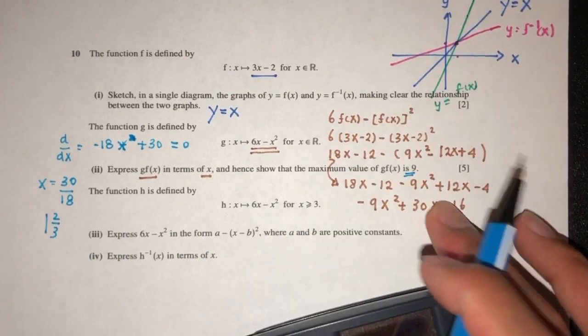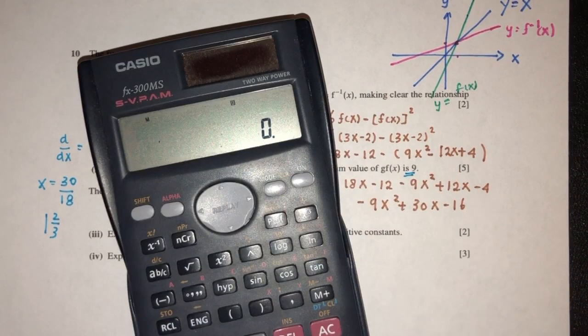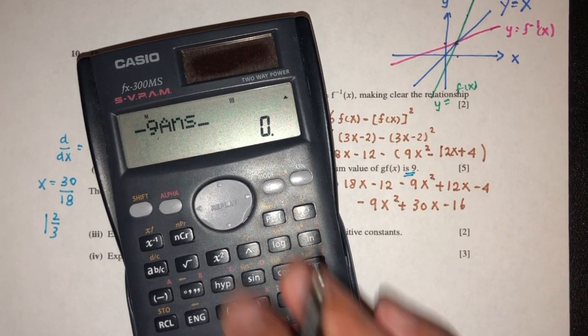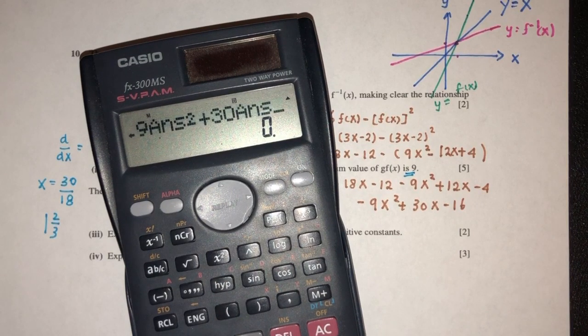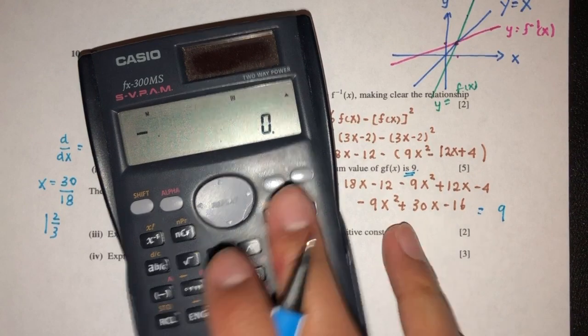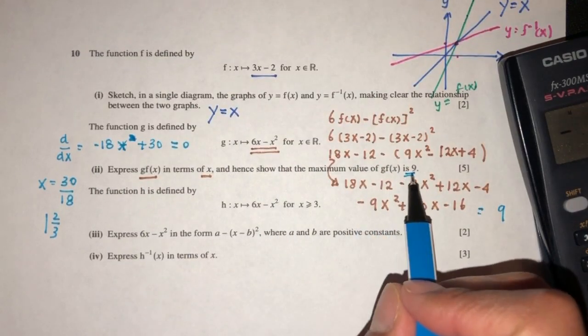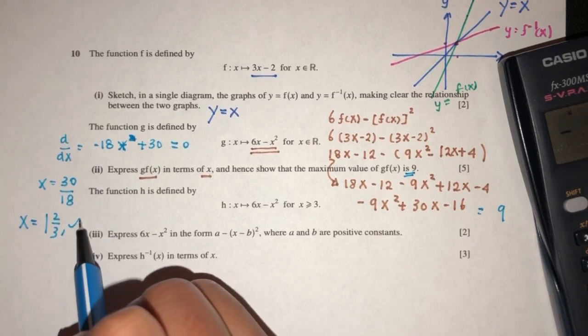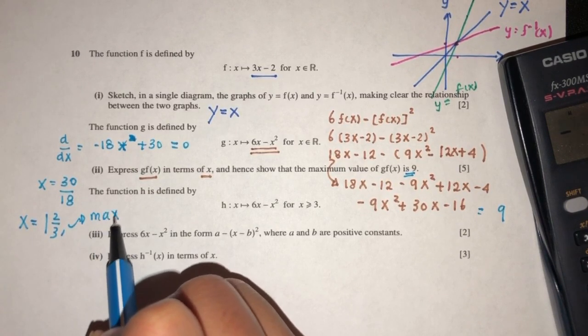Now replace it back in your equation to find that value. So minus 9, we have the answer here is this. Minus 9 times (5/3)^2, plus 30 times 5/3, minus 16. That should be 9. So shown as required. This is the maximum value is 9 when x equal to this. The max value is indeed 9.